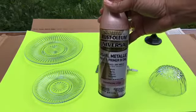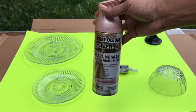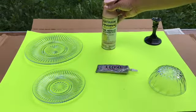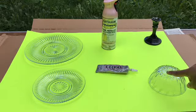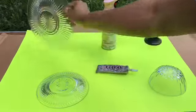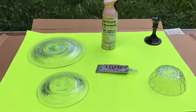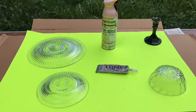Which I got from Joanne's for $10.99 using a 50% off coupon. I'm only going to spray the bottom of each glass item and then I'll use the E6000 to glue it all together.